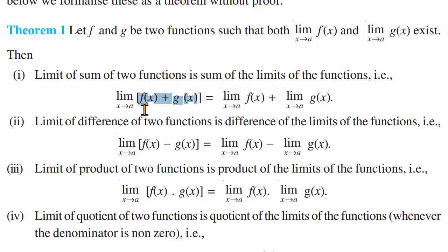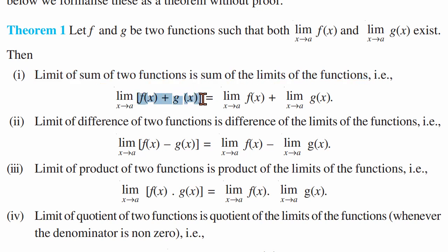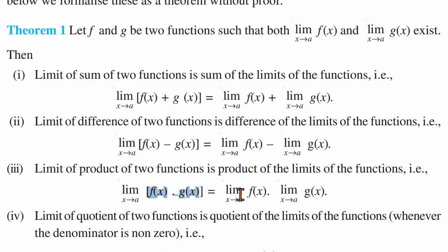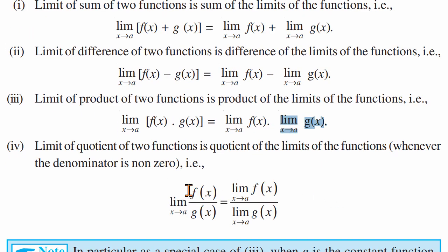The limit of the sum of two functions is the sum of the limits. So limit of f of x plus g of x equals the separate limits added. Similarly, we can subtract — take each limit separately and subtract. Multiplication: take each limit separately and multiply. Division: the numerator is a separate limit, the denominator is a separate limit, provided the denominator limit is non-zero.